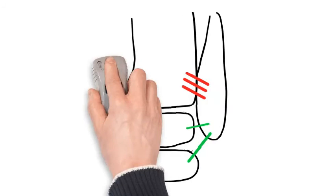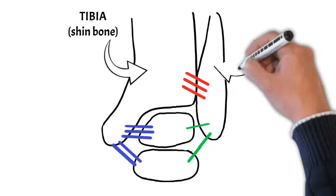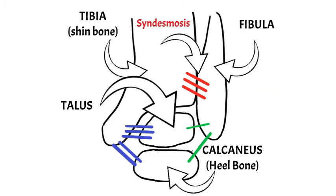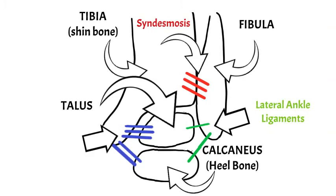The tibia, or shin bone, is shown here. Next to it is the fibula, which is on the little toe side of your ankle. The heel bone is called the calcaneus, and in between the two is something called the talus — together these make up your ankle. There are ligaments called the syndesmosis shown in red, which are really important. The lateral ankle ligaments are shown in green on the little toe side, and the deltoid ligament is shown in blue on the big toe side.